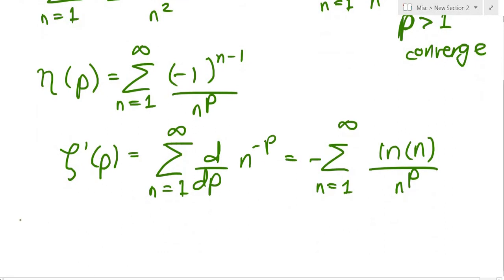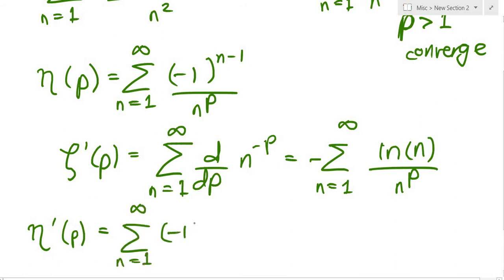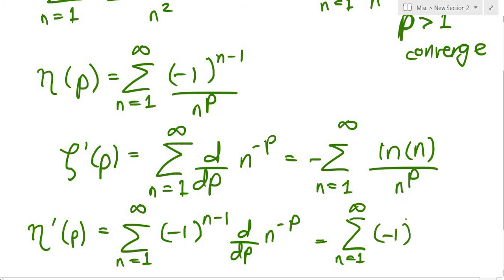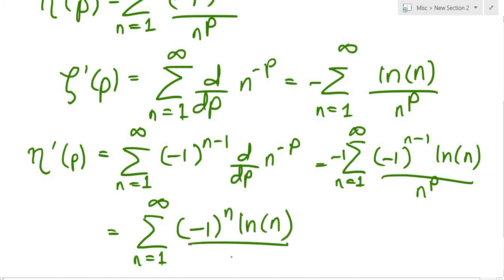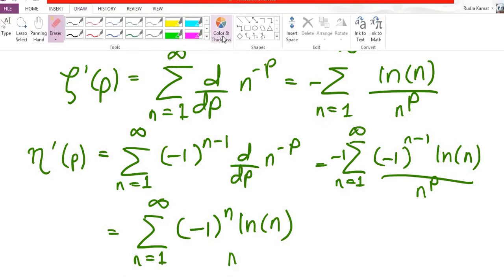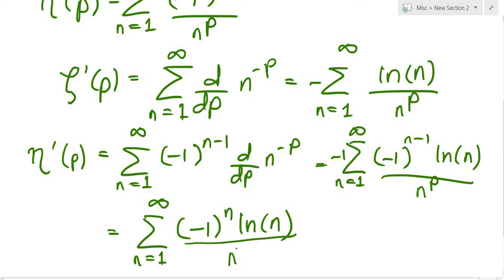Now doing the same with the Dirichlet eta: η'(p) = sum from n=1 to infinity of (-1)^(n-1) · d/dp of n^(-p). This gives (-1)^(n-1) times (-ln(n)/n^p). Multiplying (-1)^(n-1) by -1 flips the sign to (-1)^n, so η'(p) = sum from n=1 to infinity of (-1)^n · ln(n) / n^p — which is exactly our series.